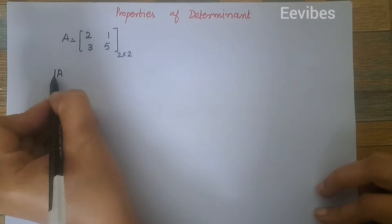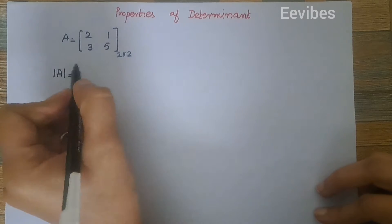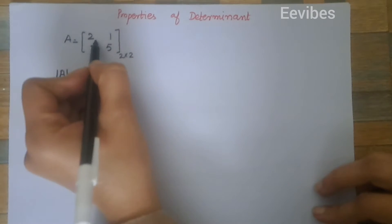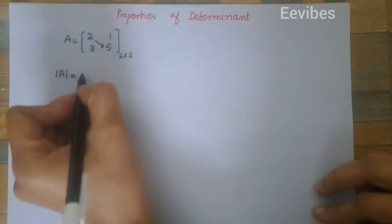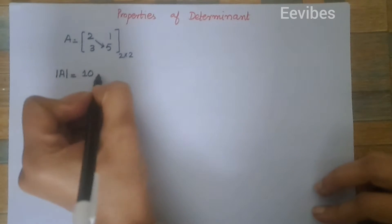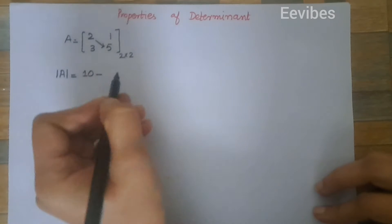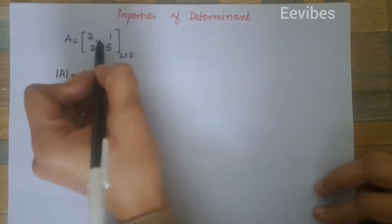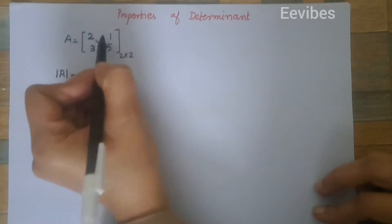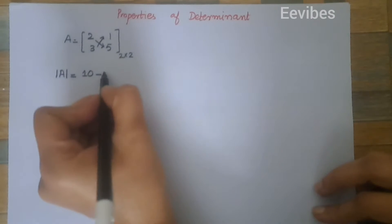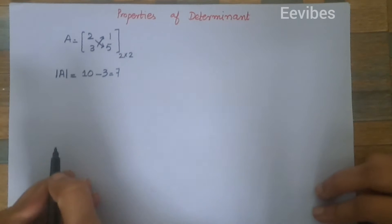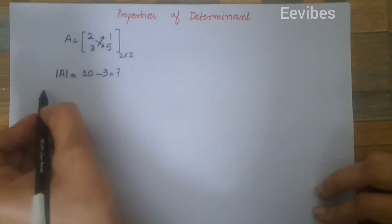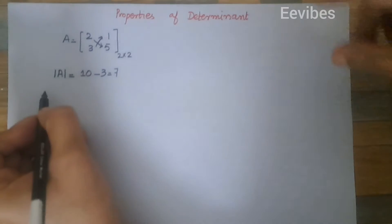I hope everyone has the idea of how to find the determinant of a two by two matrix. We multiply the diagonal entries first, then put the negative sign and multiply the off-diagonal entries. In this case the determinant of A is equal to seven.